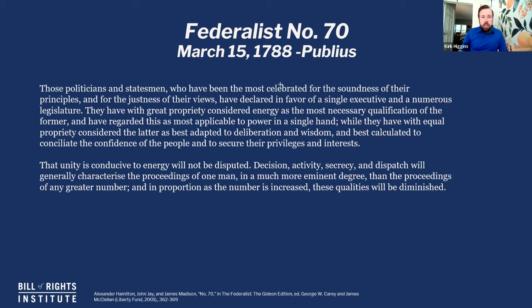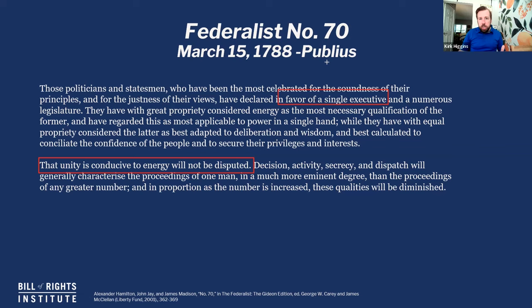Publius argues in favor of a single executive — unity, the unitary executive — saying it is best adapted to deliberation and wisdom and best calculated to conciliate the confidence of the people and secure their privileges and interests. That unity is conducive to energy will not be disputed. It has decision, activity, secrecy, and dispatch — all characteristics of a single person being in charge. We need that kind of person who has a vision, executes on it, and proceeds. He notes that energy diminishes in proportion to the number of people involved: the more people you have, the more challenging this becomes.